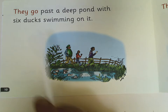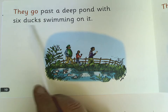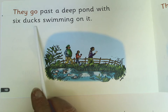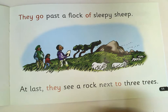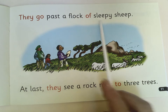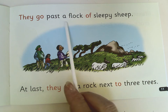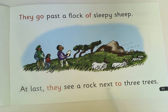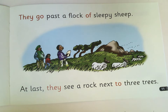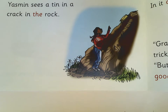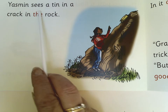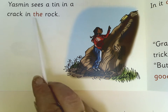My go. They go past a deep pond with six ducks swimming on it. Your go. Brilliant. They go past a flock of sleepy sheep. Your go. Well done. At last — take a breath — they see a rock next to three trees. Your go. Well done.